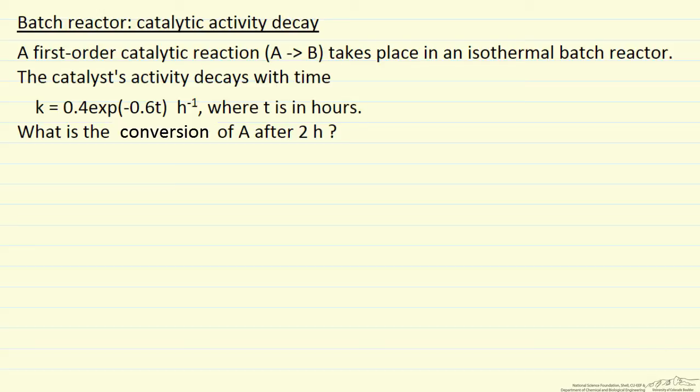The other way of looking at it is the rate constant. So the rate constant is decaying exponentially with time, with the expression indicated here, and the question then is what is the conversion of A after 2 hours, and how do we account for this activity decay?